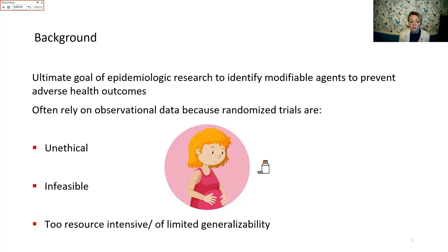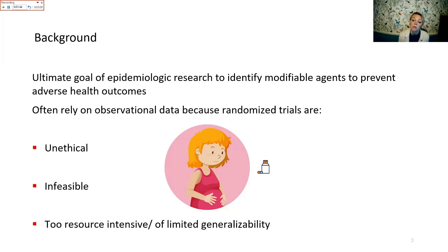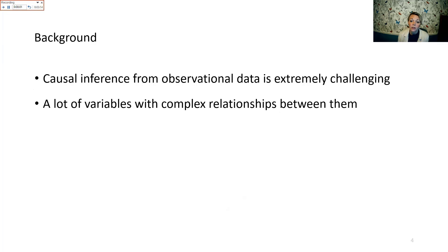Some exposures are too resource-intensive to fund a randomized study. For example, my research has been in birth defects, and those outcomes are extremely rare, so it's really hard to get funding for a randomized trial requiring an enormous enrollment. Even if we could get funding, individuals who enroll in those studies may be a more selected group, and findings may not generalize to the broader public. That leaves us often dealing with observational data, where causal inference is really challenging.